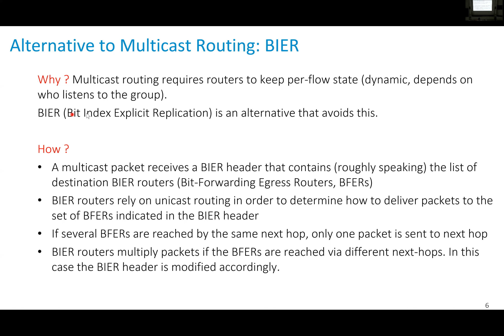This problem has been addressed by an alternative method called BIER - Bit Index Explicit Replication. The idea is simple, though it breaks some of the unifying principles described before. A BIER router manages multicast by sending packets not to the final destination but to the BIER routers at the boundary of the network - the edge routers serving customers.